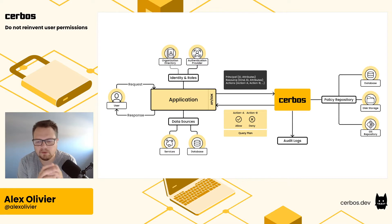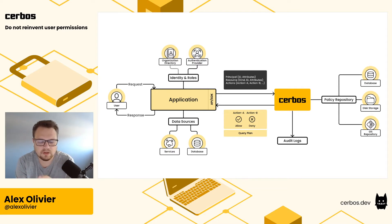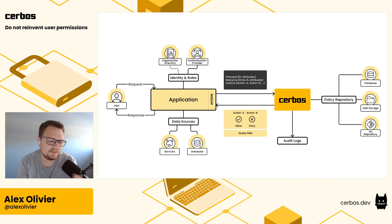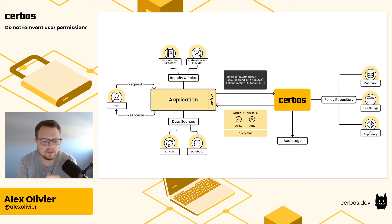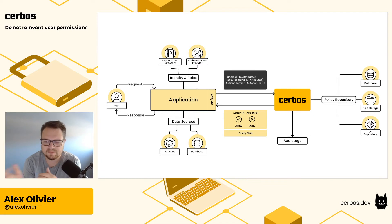The way Cerbos approaches this is: you take that information — the user, the resource, and what action they're trying to do — package it up and send it off to the Cerbos instance. We provide SDKs for all the common languages. In that request you give it the principal (the user information and its attributes from your app or external directory), the resource (its ID, what kind of resource it is, and its attributes), and the list of actions the user is trying to perform. Those could be your typical create, read, update, delete, but they can be completely open-ended — like a 'flag' or 'approve' action depending on what your app does.